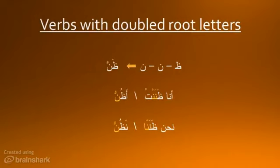أَنَا ظَنَنْتُ, أَنَا أَظُنُّ. With conjugations that include more noons, this can become confusing: نَحْنُ ظَنَنَّا, نَحْنُ نَظُنُّ. There is a شَدَّة in the past tense, but the noons from the root are separated. The شَدَّة covers the last noon from the root and the noon of the suffix. In the present tense, the prefix is not next to the root noons.